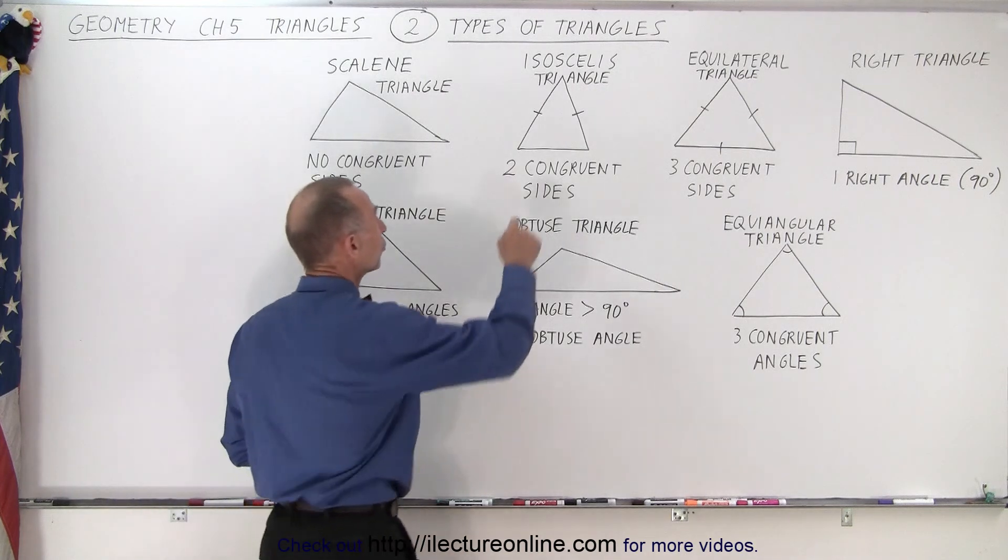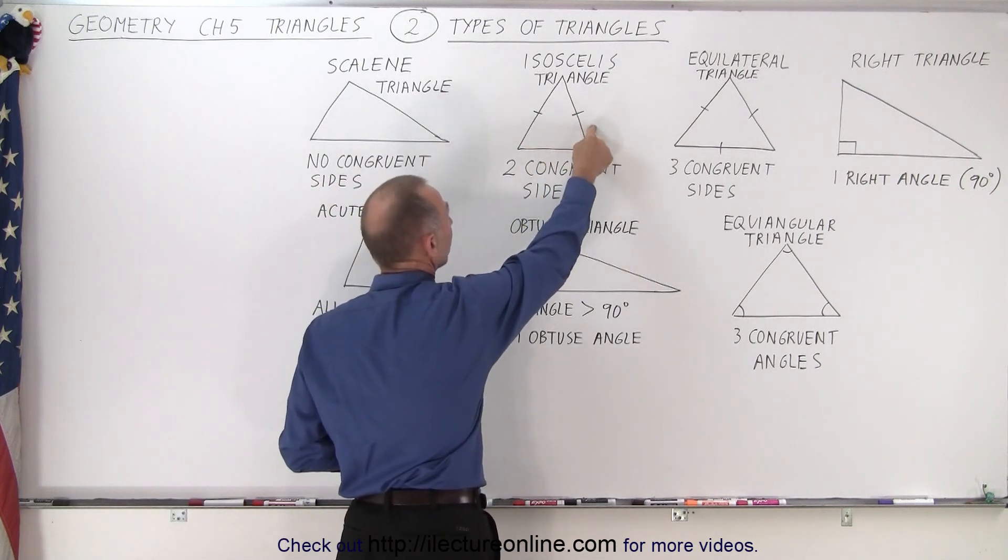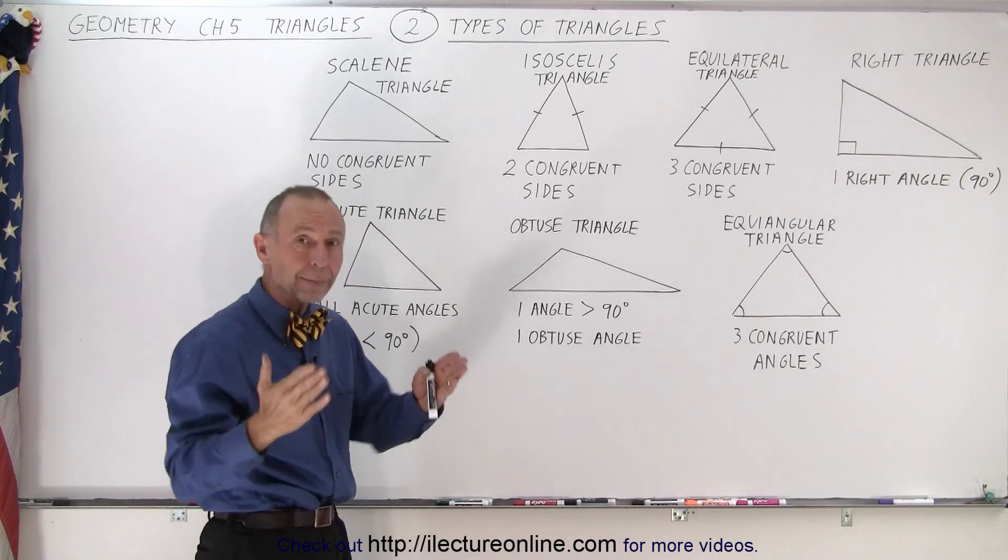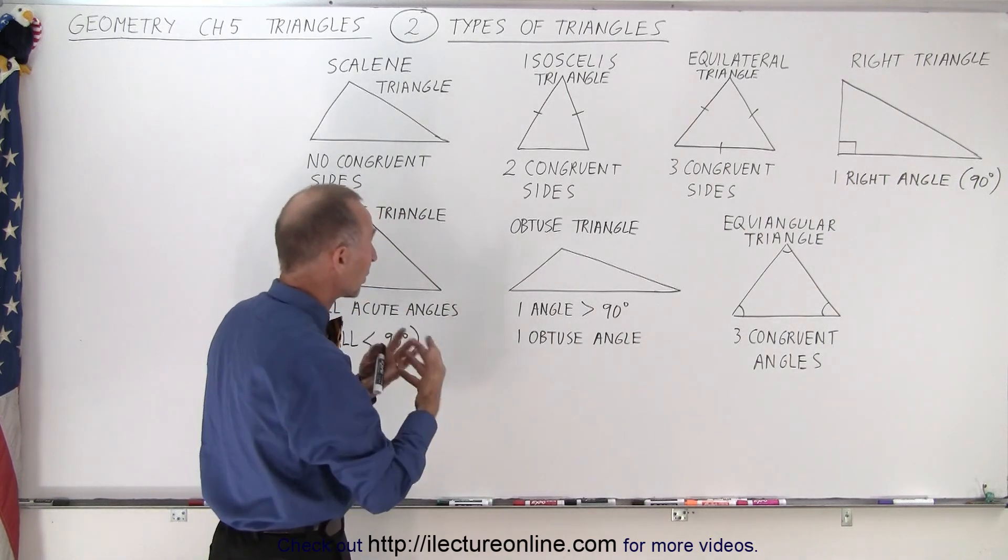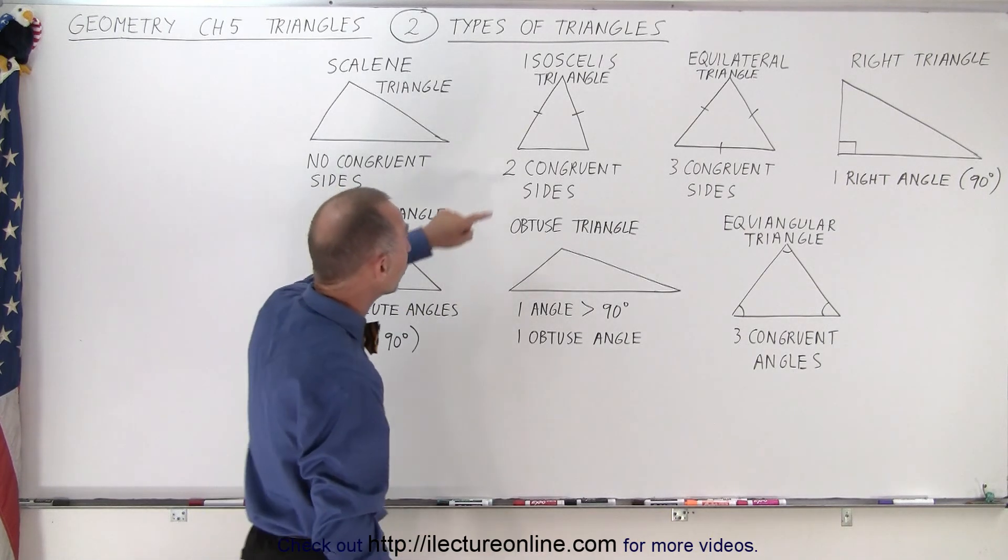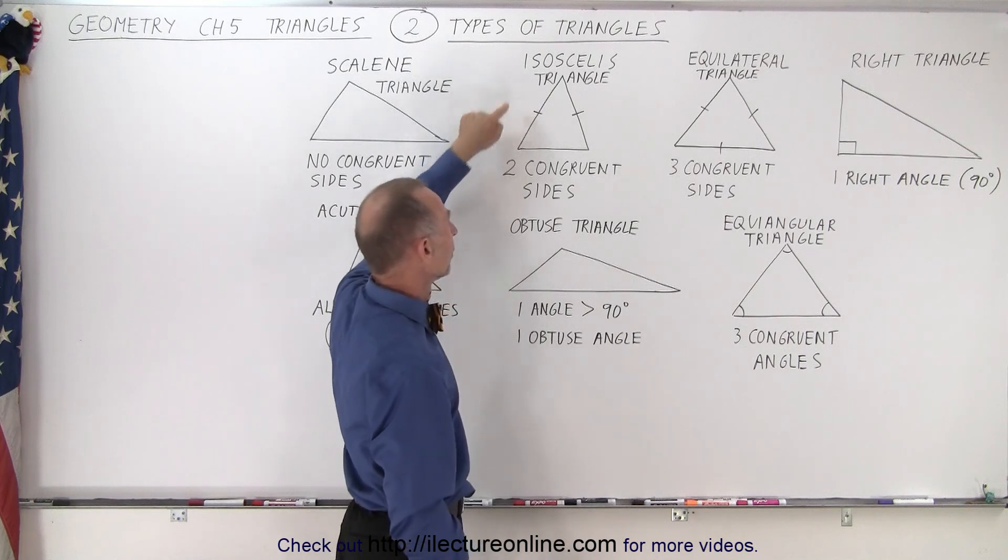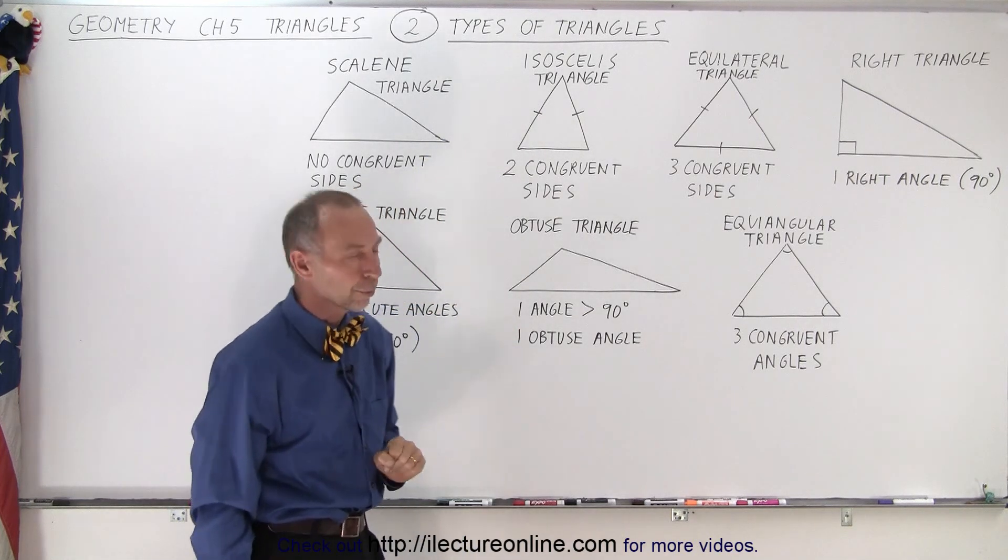Opposed to that, we can have a triangle where two sides are congruent to one another, meaning they have the same length. They may be oriented in a different direction but they both have the same length and that is called an isosceles triangle. Two sides are congruent.